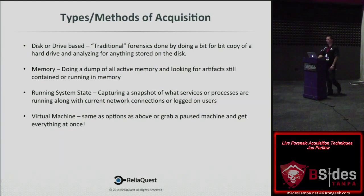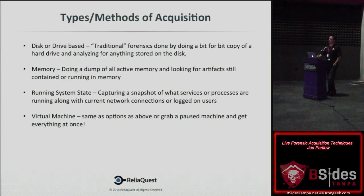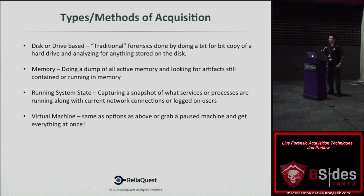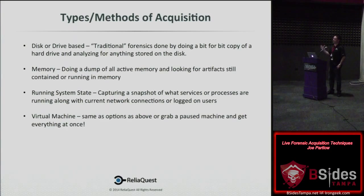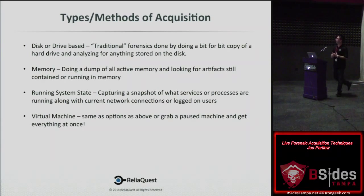Memory acquisition is huge — especially when stuff is running in memory with active connections and active processes. Get that dump so you can bring it back and analyze it. Volatility is a great tool — it's going to save you a lot of time and you'll find a lot of stuff there versus just looking on disk. Running system state — services, processes, network connections, logged-on users — gives you insight on what the machine is doing.